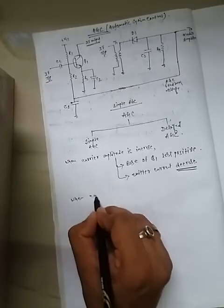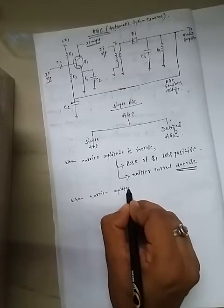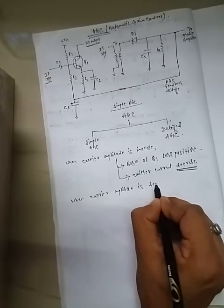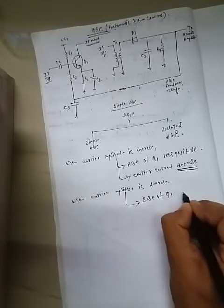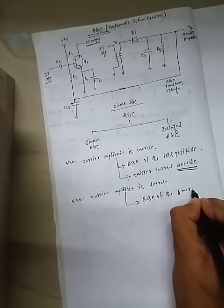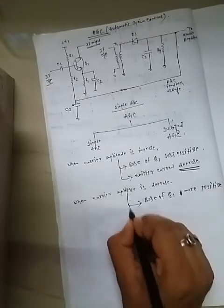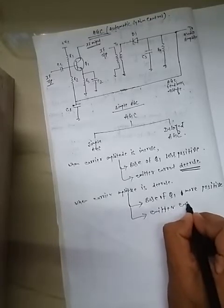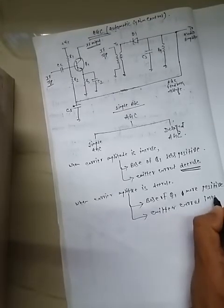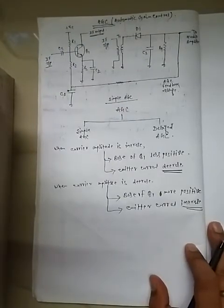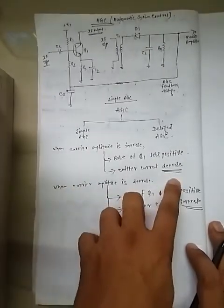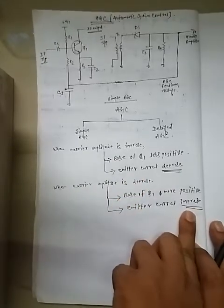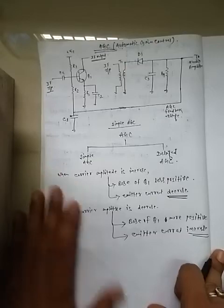When the carrier amplitude decreases, the base of Q1 becomes more positive, so the emitter current increases, meaning the output increases. This is the main function of the AGC circuit: to maintain constant output. When carrier amplitude increases, output decreases; when carrier amplitude decreases, output increases. This is the Simple AGC circuit, which consists of two parts: the IF amplifier and the peak detector, where a negative peak detector is used producing negative voltage.